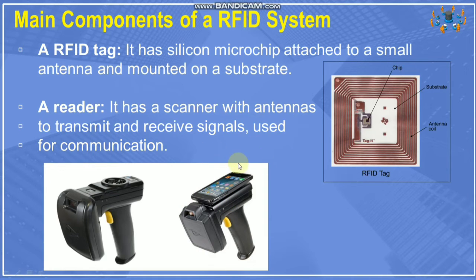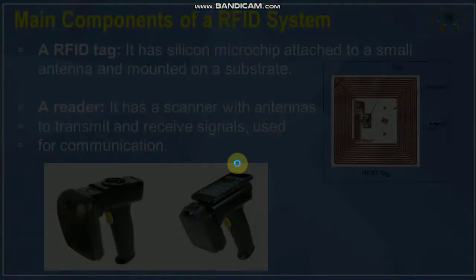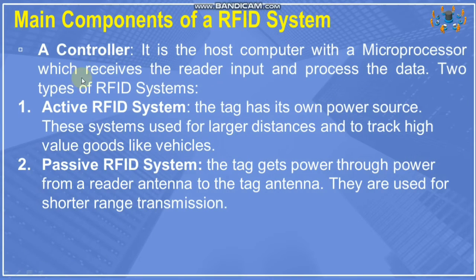The reader is used for communication. So the three main components of the RFID system are: first the RFID tag, second the reader, and third the controller. This is a very important three-mark question — what are the main components of an RFID system?